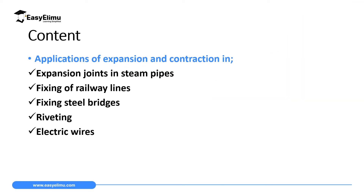By the end of this lesson I expect you to be able to explain the application of expansion and contraction in expansion joints in steam pipes, fixing of railway lines, fixing steel bridges, riveting, and in electric wires.